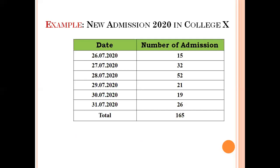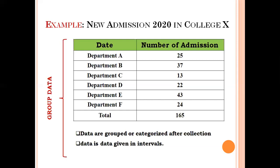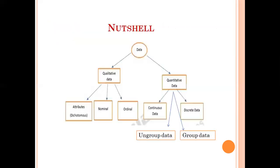Now, taking the same example: College X admitted 165 students, and there are six different departments. 25 students joined Department A, 27 joined Department B, 24 joined Department F, and so on. We have classified the 165 students into different departments. When raw data are categorized and arranged systematically — in this case by department — such data are called grouped data.